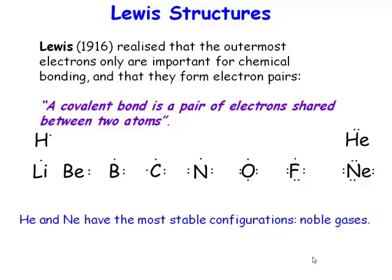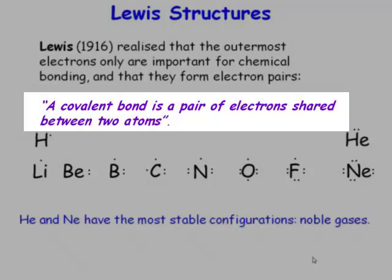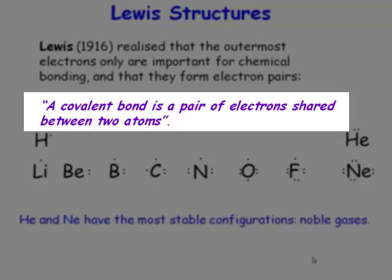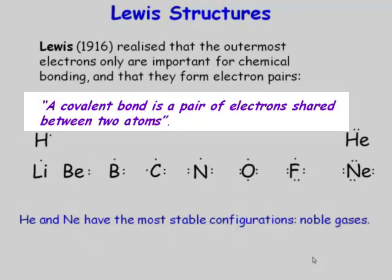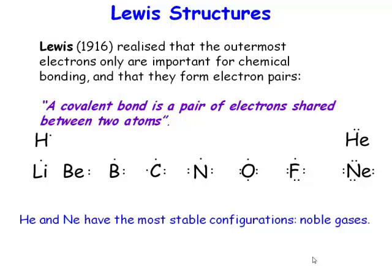The only electrons that are important in atoms are the outermost, or valence electrons. The chemical bond consists of a pair of electrons. So when chemical bonds form, they form through sharing electrons between two atoms.